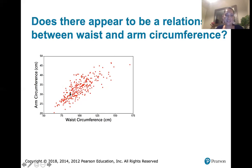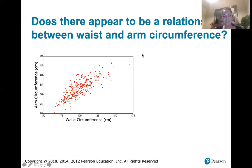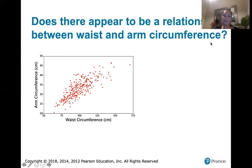When I look at this, I see that in general, as waist circumference goes up, arm circumference tends to go up as well. Now it's not perfect — these don't all lie on a perfect line — but they all sort of hover around a line. You've got this collection of data that all sort of goes from the bottom left to the top right. So there does appear to be a relationship between those variables, and this graph is allowing us to determine whether there's a relationship.